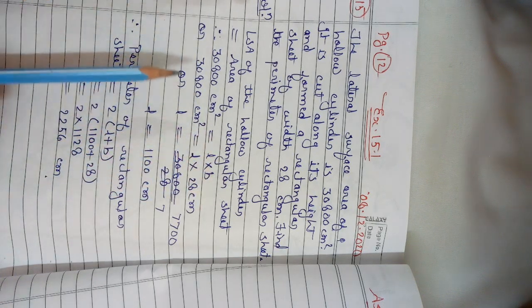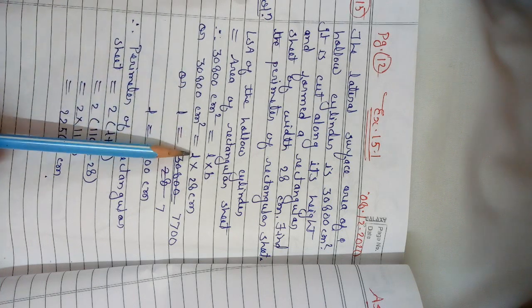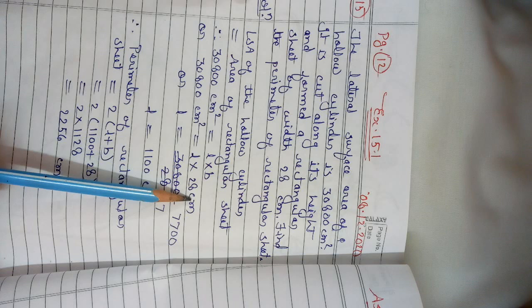We can write 30,800 = L × 28 cm, which is the width of the rectangular sheet. So L = 1100 cm.